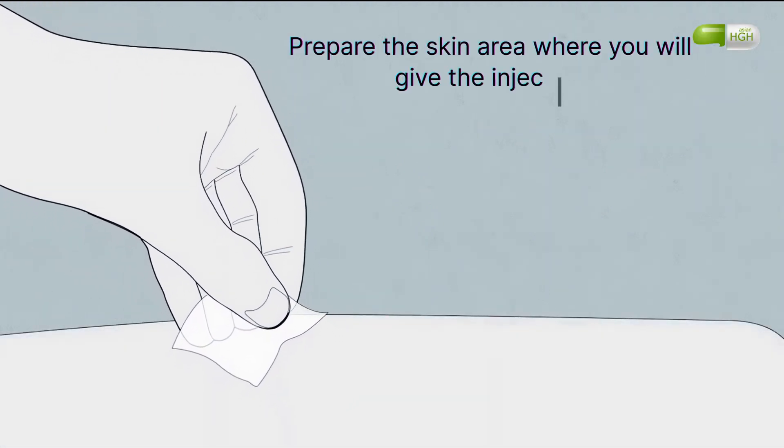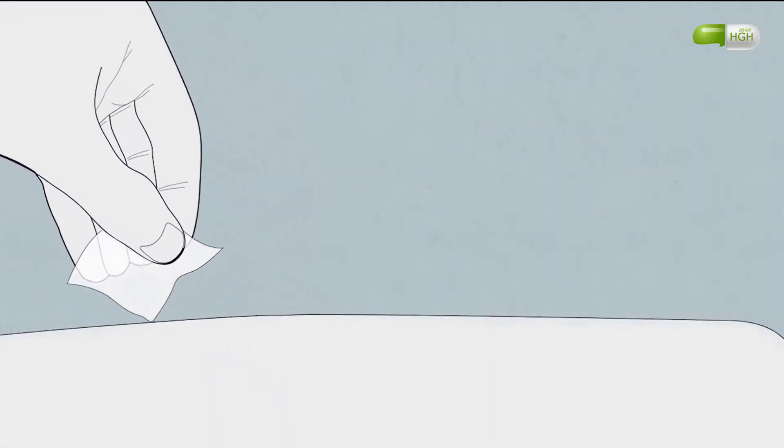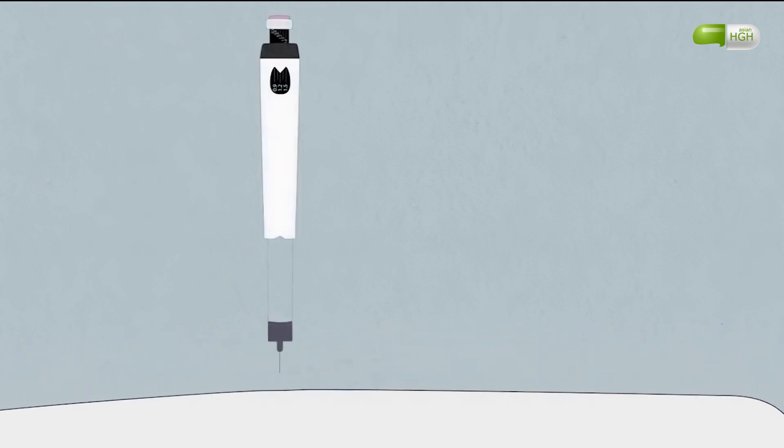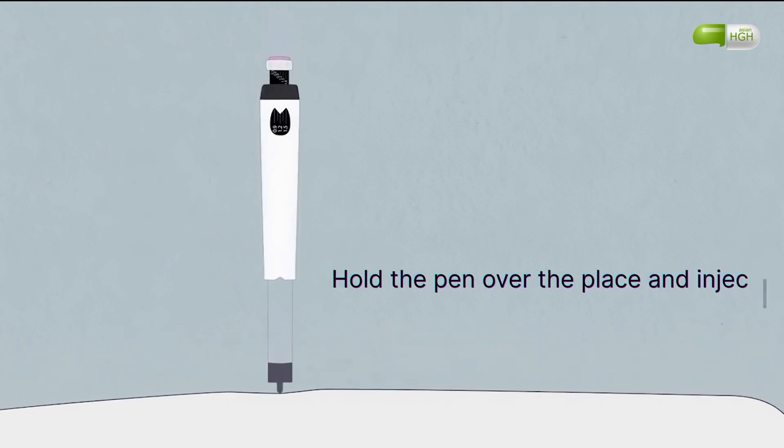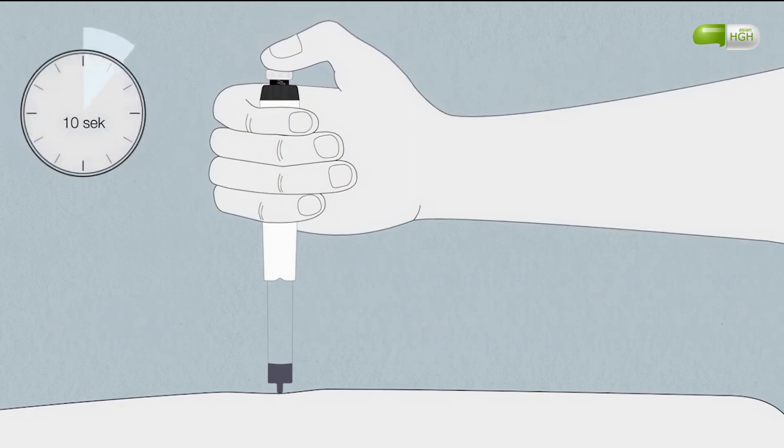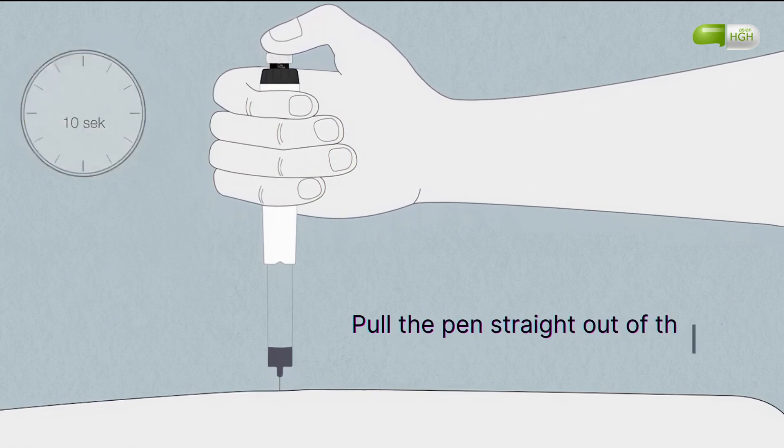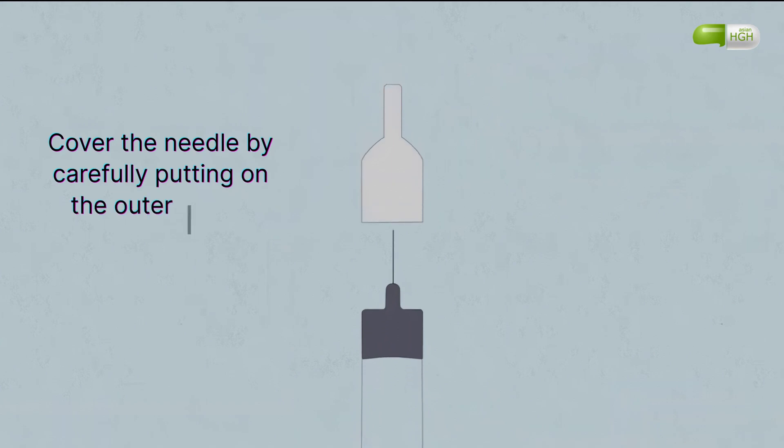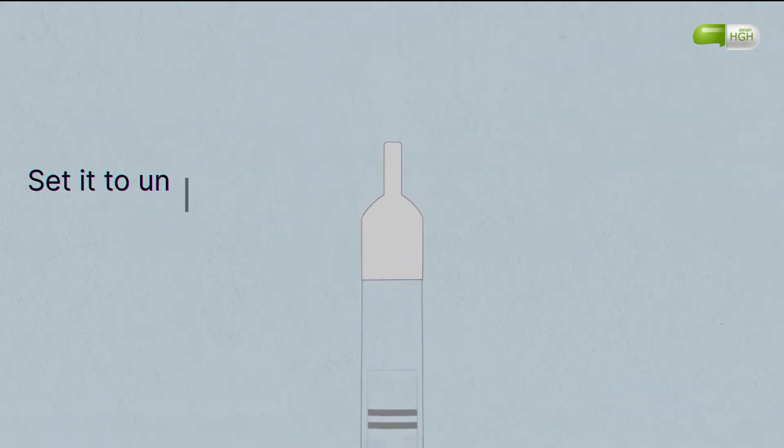Prepare the skin area where you will give the injection. Hold the pen over the place and inject under the skin. Use your thumb to press the injection button until it stops clicking. Then calmly count to 10. Pull the pen straight out of the skin. Cover the needle by carefully putting on the outer guard. Set it to unscrew the needle and place it in a container suitable for storing used needles.